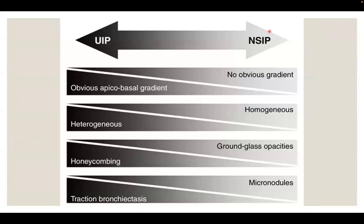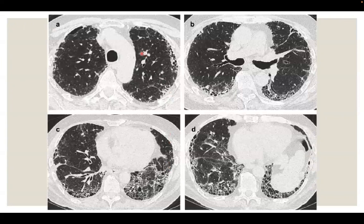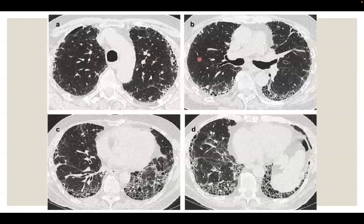UIP and NSIP both belong to chronic fibrosis and interstitial pneumonia, so there is always comparison between them. In UIP, there is obvious apico-basal gradient with heterogeneity of findings. Honeycombing is the main feature of UIP along with traction bronchiectasis. We can appreciate the apico-basal gradient: honeycombing increases from image A to B to C to D, which shows the maximum extent of honeycombing.